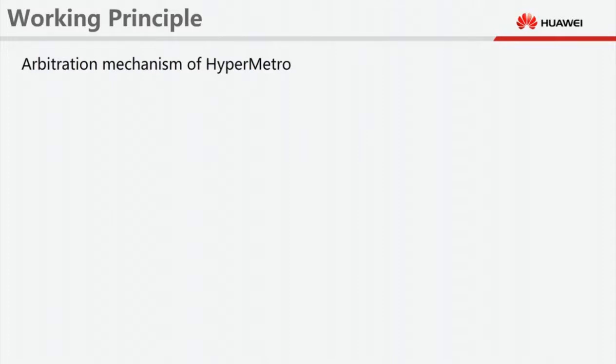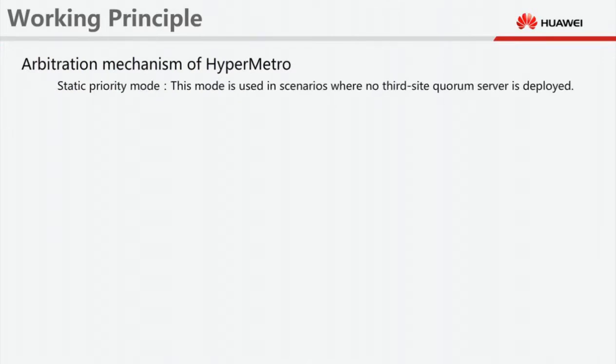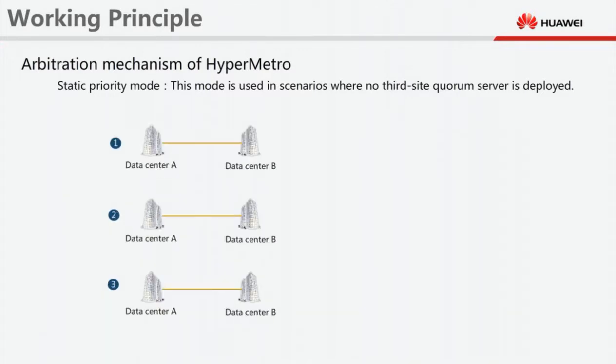Arbitration mechanism of HyperMetro. To ensure data consistency, HyperMetro uses an arbitration mechanism to determine the priorities of services in different data centers. HyperMetro supports two arbitration modes: static priority mode and quorum server mode. In both of the following examples, data center A is the preferred site and data center B is the non-preferred site. Static priority mode.